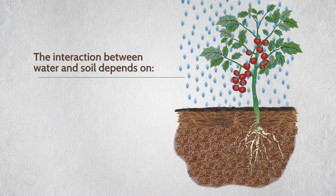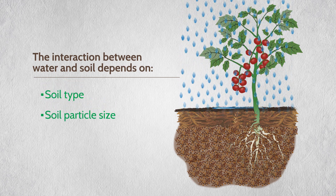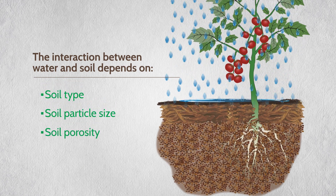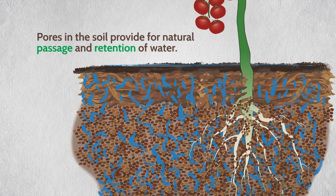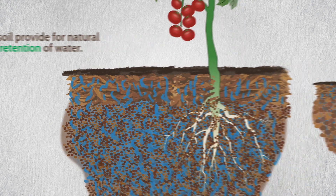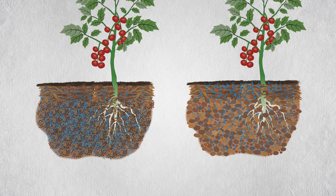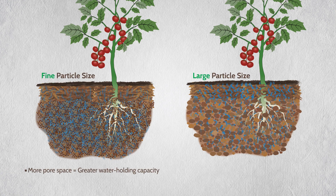The interaction between water and soil depends on factors such as soil type, soil particle size, soil porosity, and organic matter. Pores in the soil provide for the natural passage and retention of water within the plant root zone. A soil's ability to retain water is related to particle size and organic matter. Soils with fine particle size, such as clay, have more pore space and greater water holding capacity.